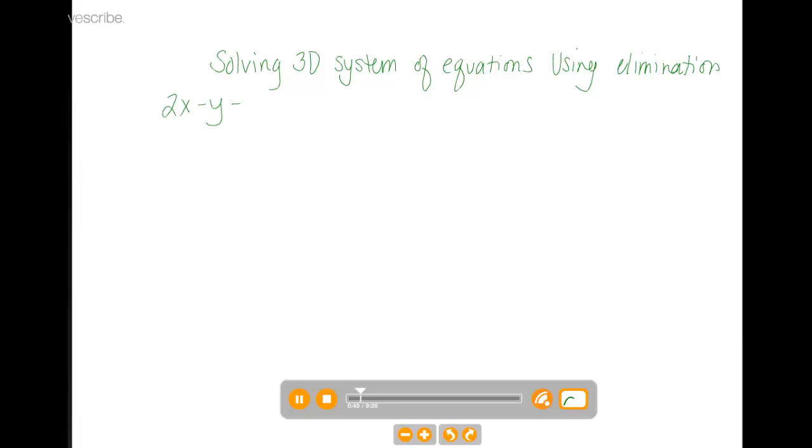We're going to do a similar method, but this time our system might look something like this. Instead of just x's and y's, we're going to see x's, y's, and z's. So here's one equation. Let's get a system down. If we want to have a unique solution, if we have three variables, hopefully we have three equations. And in this example we do.